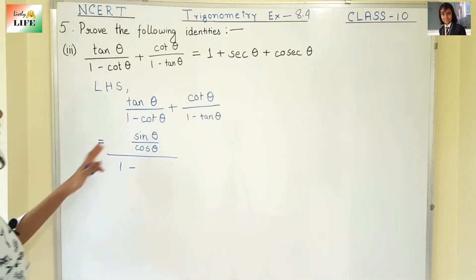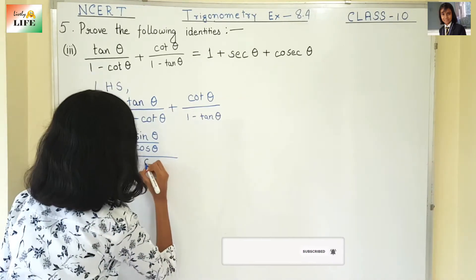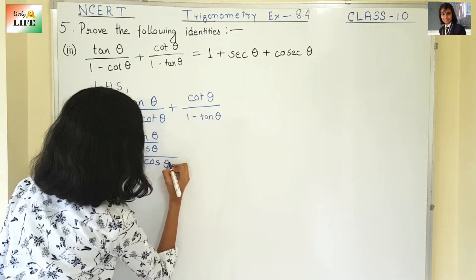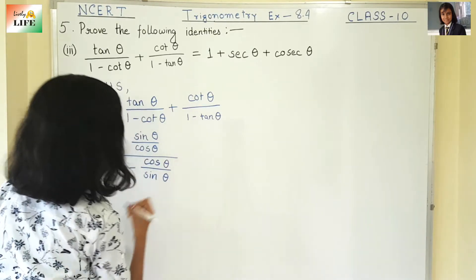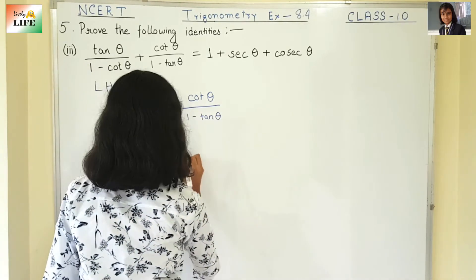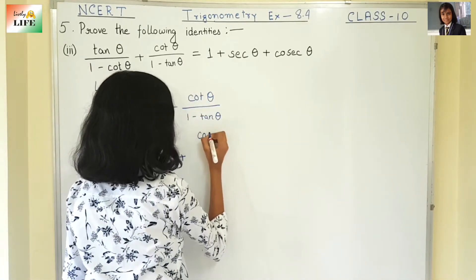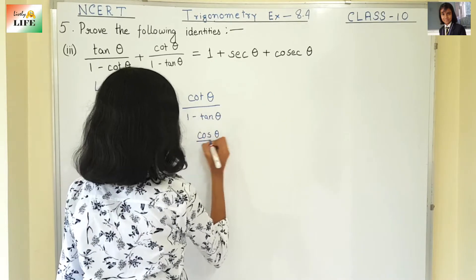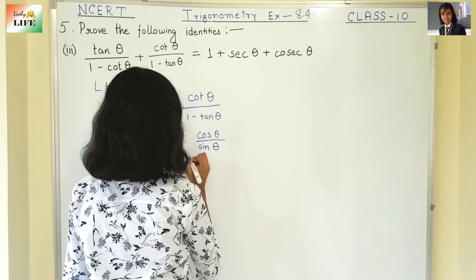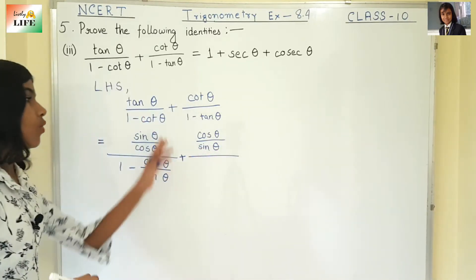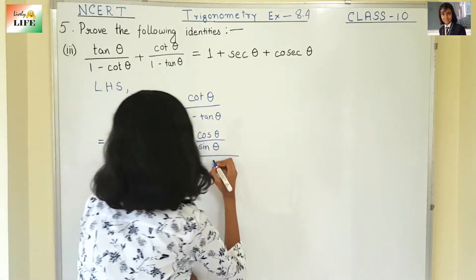1 minus cot theta — what is cot theta? It is cos theta by sin theta. Plus cot theta again, which is cos theta by sin theta. And 1 minus tan theta is 1 minus sin theta by cos theta.